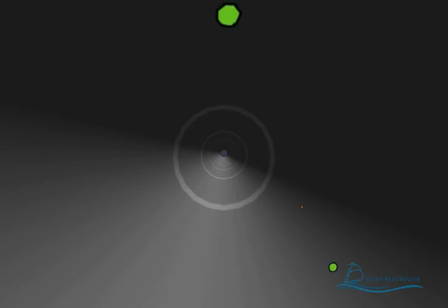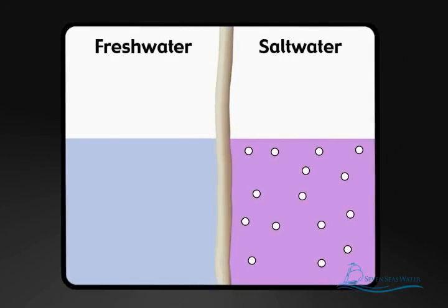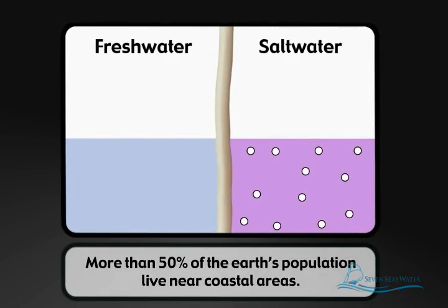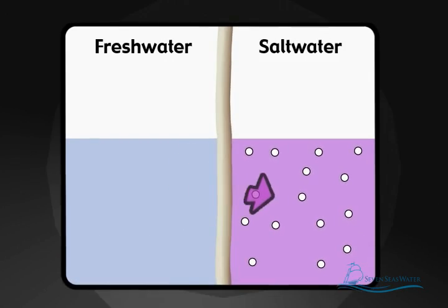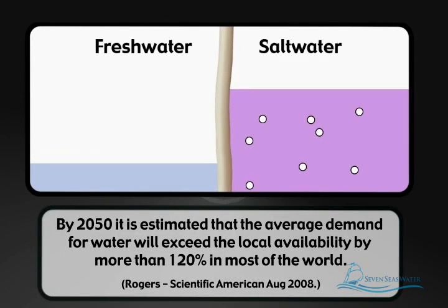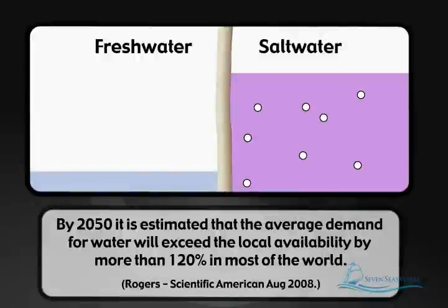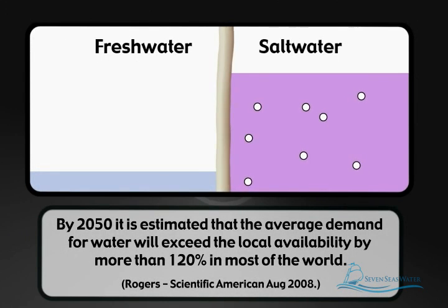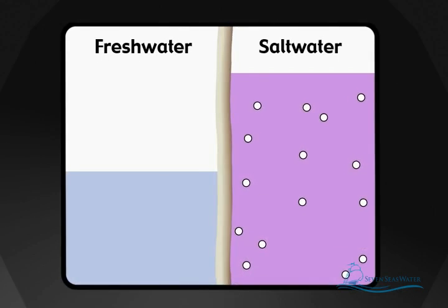Osmosis is a naturally occurring process where a solvent, such as water, passes through a semi-permeable barrier. The semi-permeable barrier, or membrane, allows some things to pass through it but not others. In nature, the direction of flow through the membrane is from a less concentrated solution, such as freshwater, to a more concentrated solution, such as seawater, until equilibrium is reached.